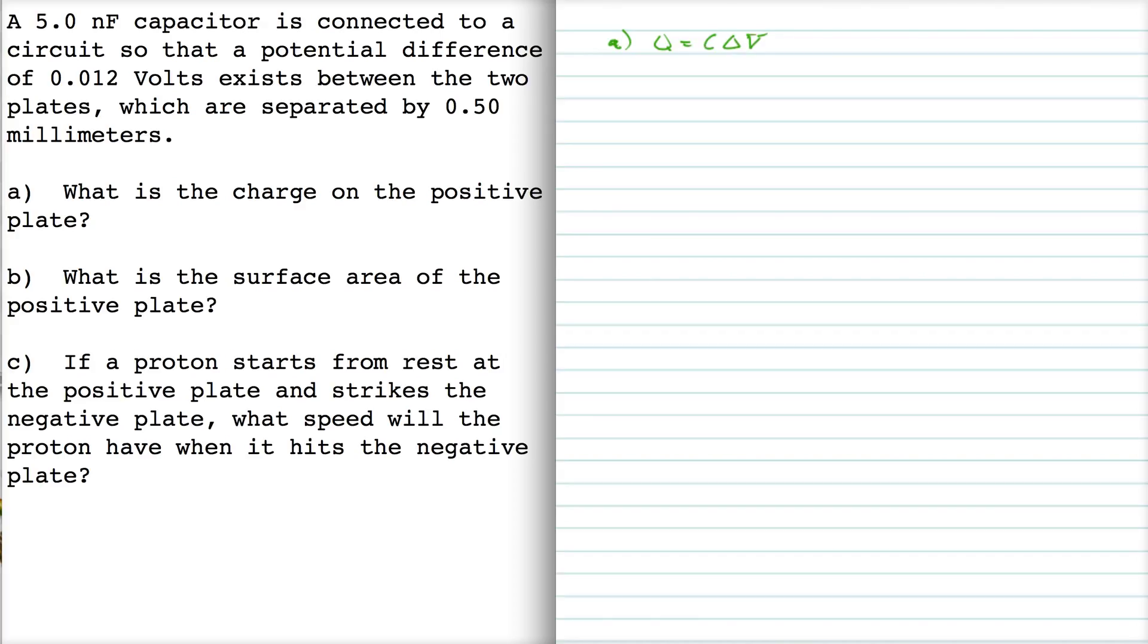I'm going to use the capacitor equation Q equals C delta V, right, because we know the capacitance is 5 times 10 to the minus 9, which is 5 nanofarads, and we know the potential difference between the plates is 0.012, and so the charge on the positive plate is 6 times 10 to the minus 11 coulombs.